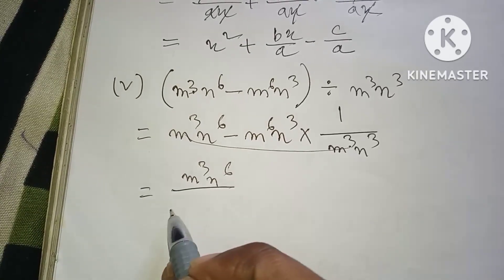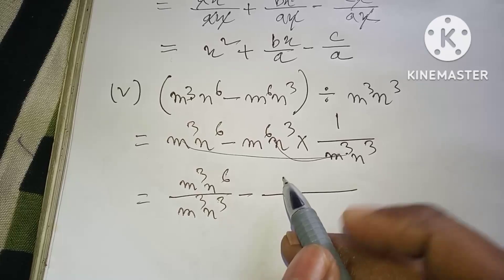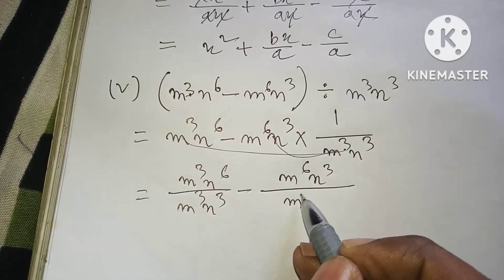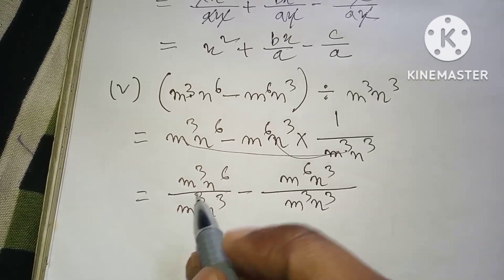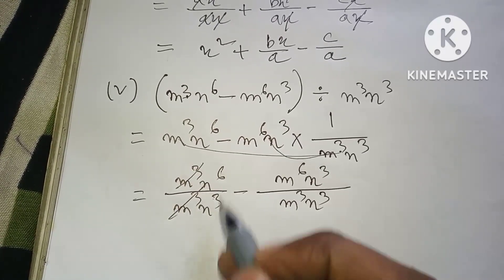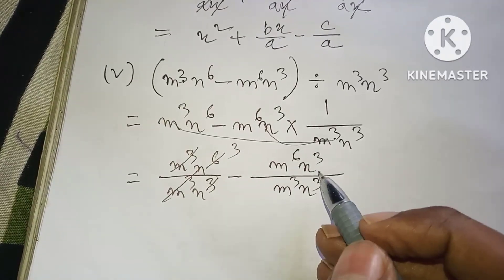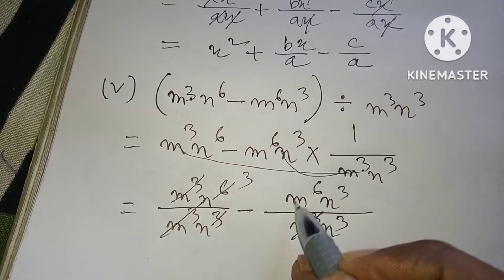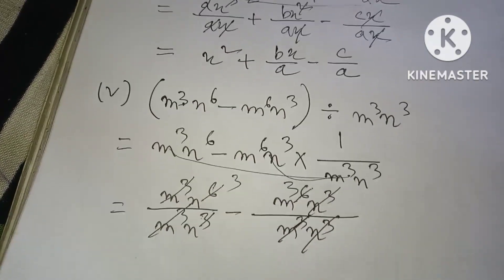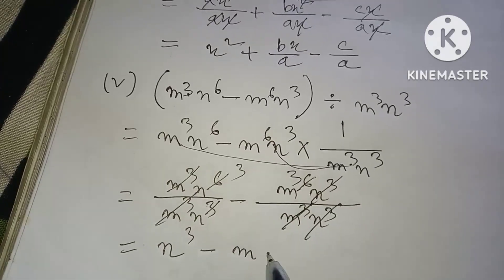m to the power 3 n to the power 6 divided by m to the power 3 n to the power 3, minus m to the power 6 n to the power 3 divided by m to the power 3 n to the power 3. After cancellation: m to the power 3 minus n to the power 3.